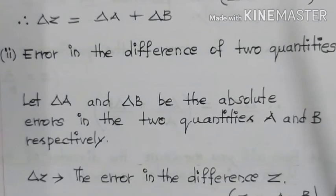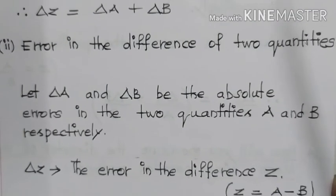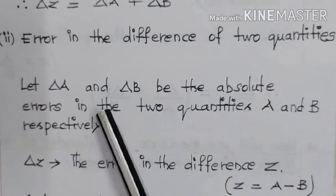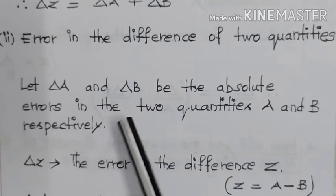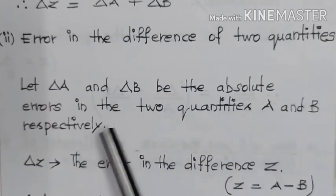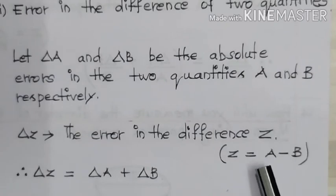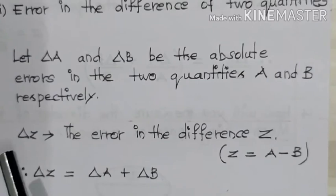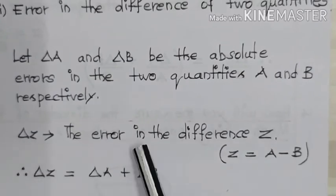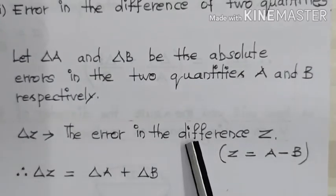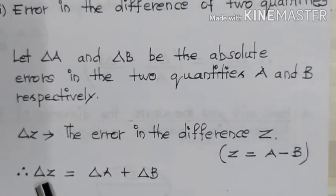Error in the difference of two quantities. Let delta A and delta B be the absolute errors in the two quantities A and B respectively. Here Z represents the difference between the two quantities A and B, so Z is equal to A minus B. Therefore, delta Z is the error in the difference, that is Z. The expression is: delta Z is equal to delta A plus delta B.